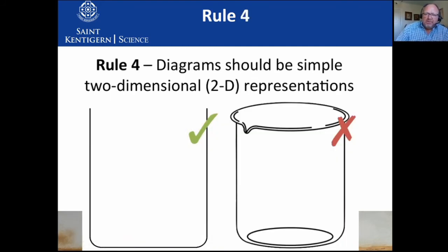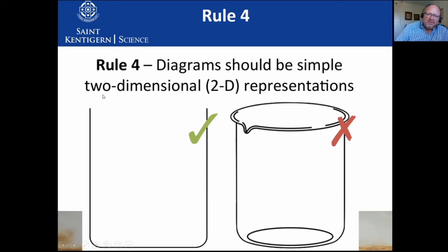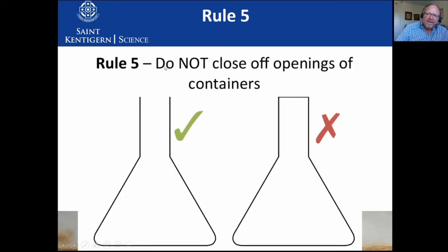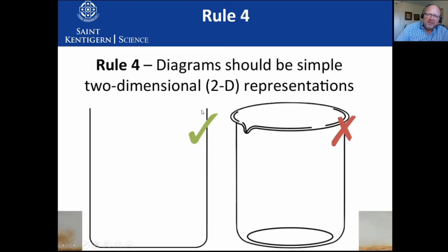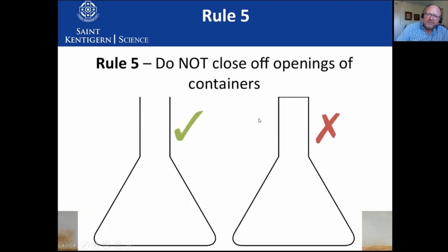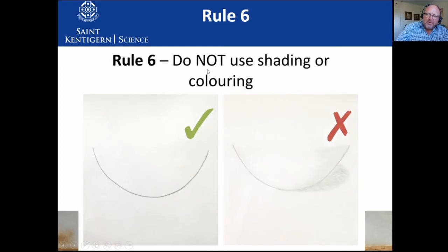When you're drawing, you draw it in a two-dimensional shape. Even though 3D looks really awesome, you have to draw in two dimensions. When something is open at the top, don't close it by putting a line up there — you leave it open. Look at the previous one: it's open at the top. We're not using any shading to make it look nice. This is a scientific drawing, it is not art. So we just draw it and there you go.